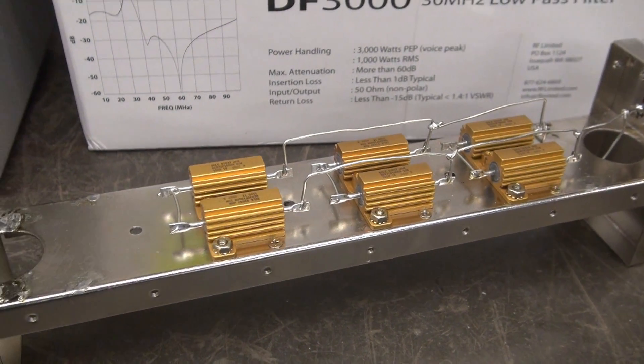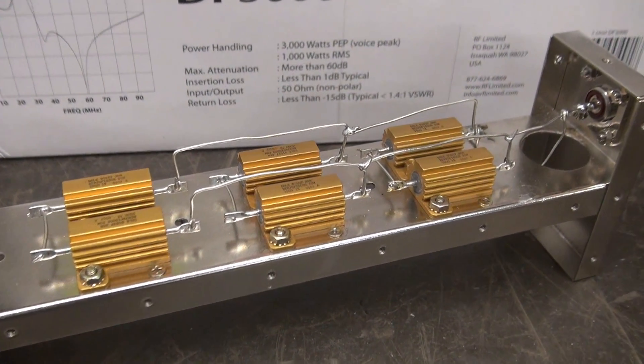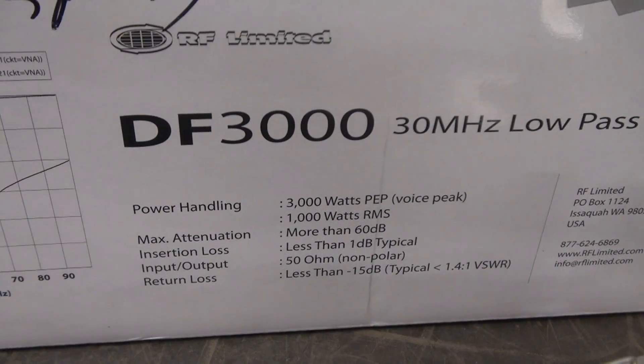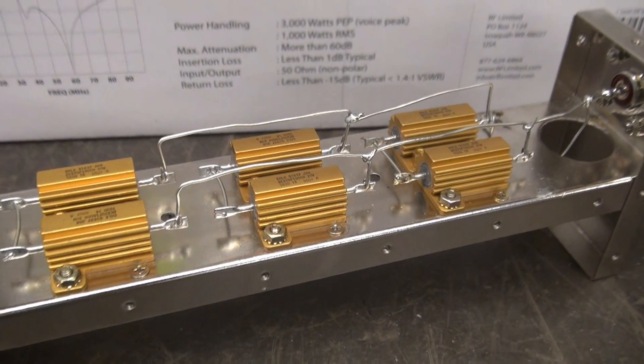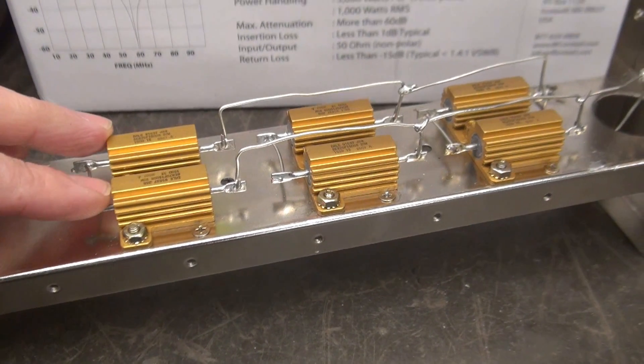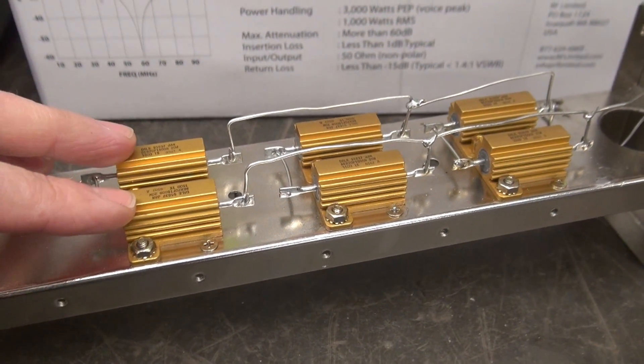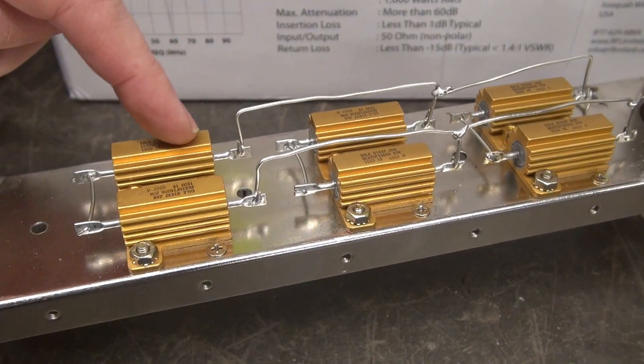Well, here's the high power dummy load complete, built in the low-pass filter case that I showed you earlier. There's the model number in case you want to find one of these and use this cabinet. So what I did is I use the same 150 ohm resistors. These are 20 watt Dale non-inductive resistors.